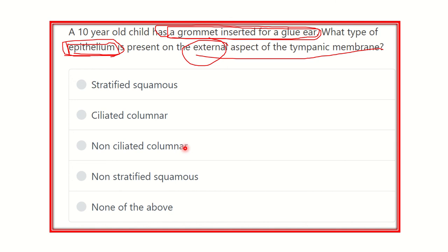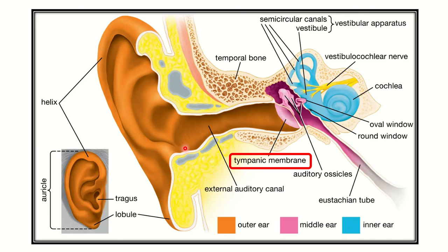Let's look at a picture. Here we can see this is a picture of the ear. We can see the pinna of the ear, then this area is the external auditory meatus, which ends at the tympanic membrane.